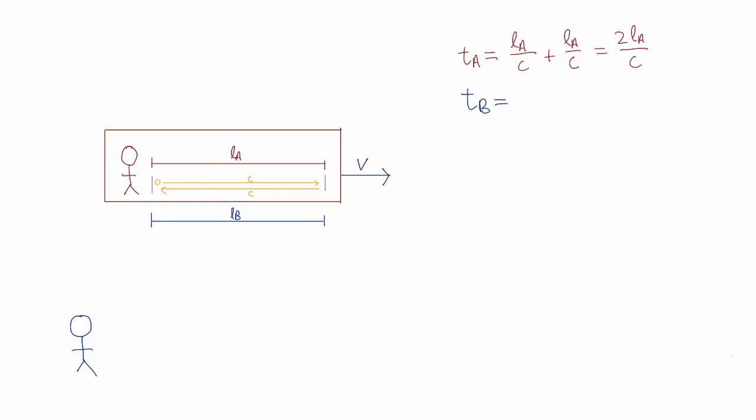Now let's look at things from Bob's reference frame. The two mirrors are initially separated by a distance LB. The photon is moving to the right at speed C, but the rightmost mirror is moving away from the photon at speed V.